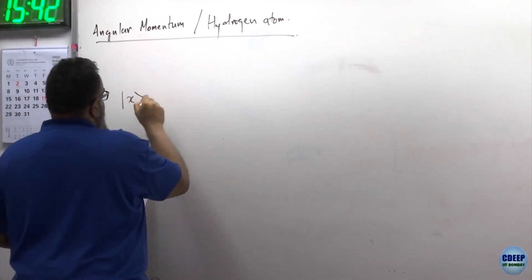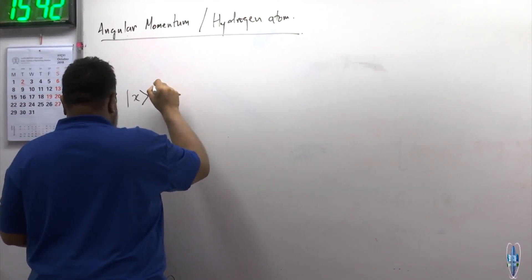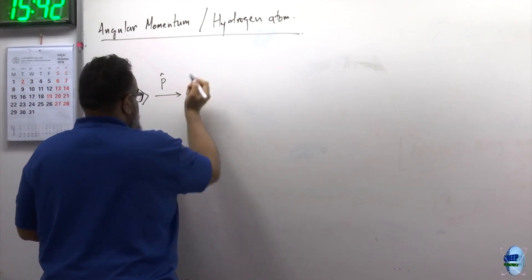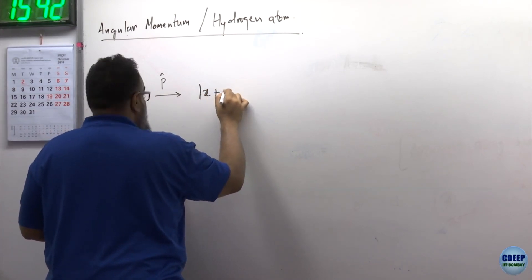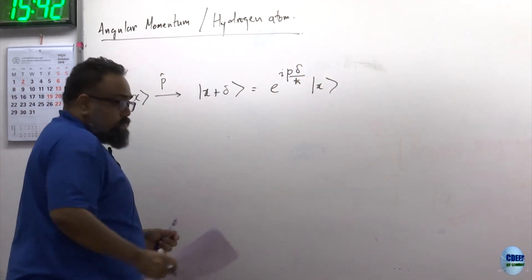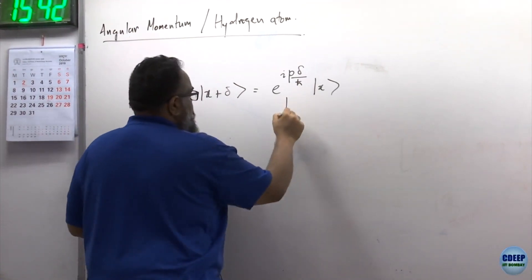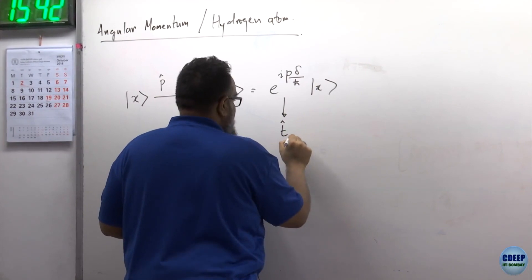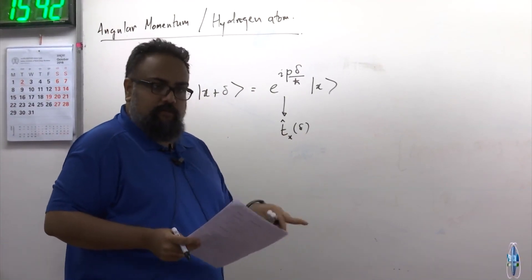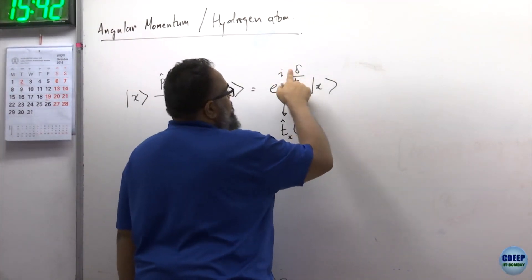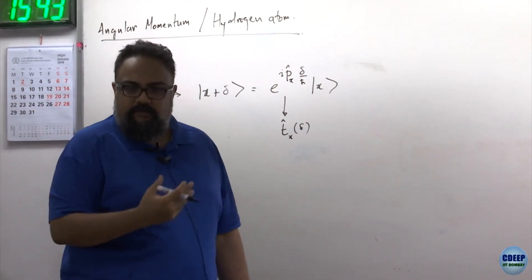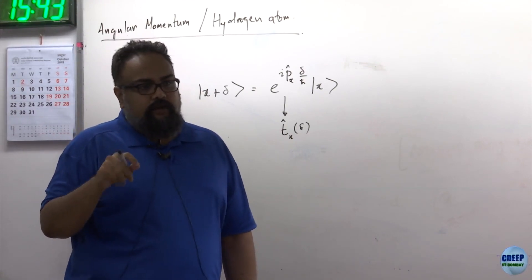Consider a vector x being transported a little bit by the operator P. The way it will be transported is basically moving to x plus delta, which is e to the iP·delta divided by h-bar acting on x. This quantity we can refer to as T_x of delta. T_x basically tells you the direction along which the momentum operator is acting.